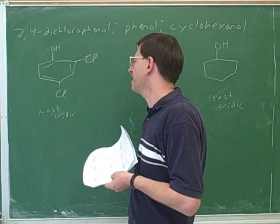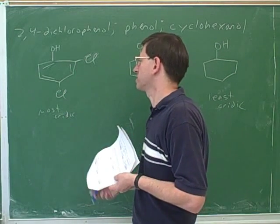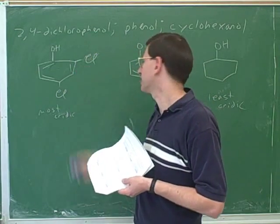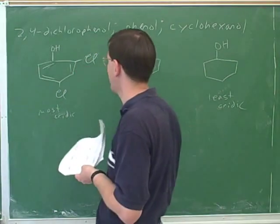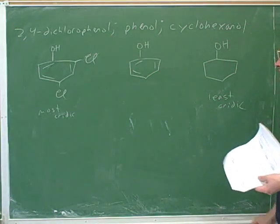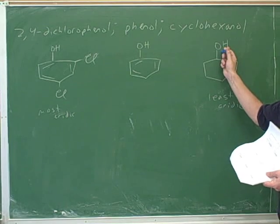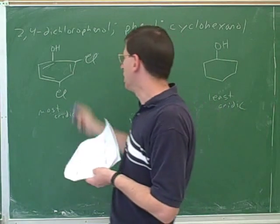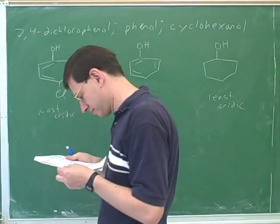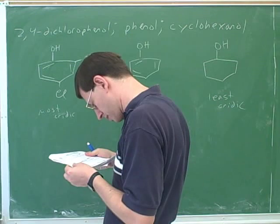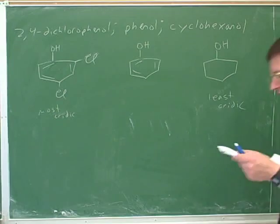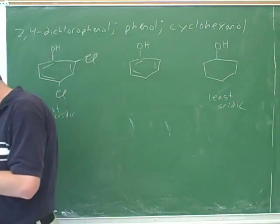It doesn't even matter so much that the chlorines are at the ortho and para positions in this case, because we're not comparing it to anything else. If we were comparing this to something where the chlorines were at the meta position, then we could look at that. So this is moderately acidic, and this is the least acidic. Normal alcohols are not very acidic. Phenols are more acidic than normal alcohols, although still not as acidic as a carboxylic acid. That's a good coverage of the acid-base properties and ranking things in order of acidity.